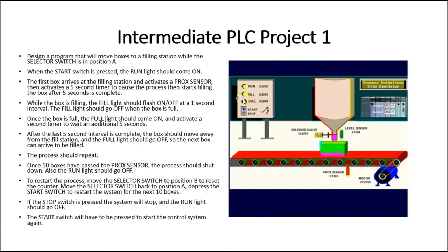The fill light goes off when the box is full. Once full, the full light comes on and activates a second five-second timer. After that interval, the box moves away from the fill station and the next box arrives, repeating the process. This continues for ten boxes. Once ten boxes are full, the process shuts down until the selector switch is changed to B to reset the count, then back to A to start over.